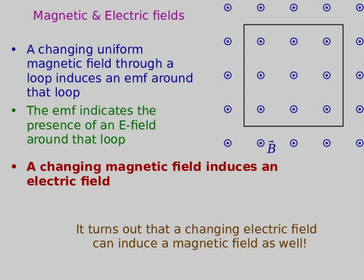This is where we see the unification of electric and magnetic fields into the electromagnetic field. It also turns out that a changing electric field can induce a magnetic field. If you have an electric field and you change it in direction or strength, it will induce a magnetic field right there — not just because charges are moving, but immediately where the field is changing. So: changing electric fields induce magnetic fields, and changing magnetic fields induce electric fields.